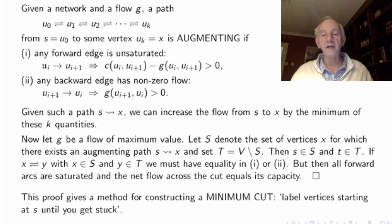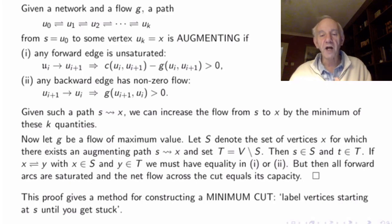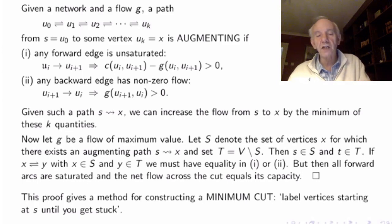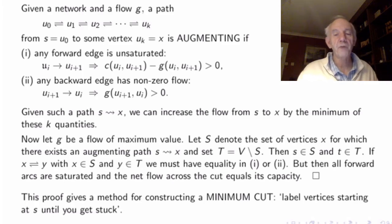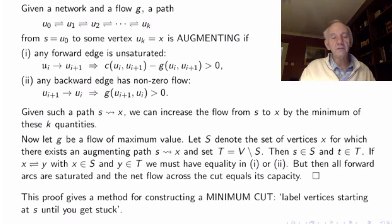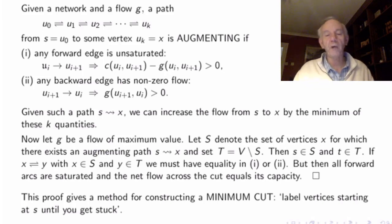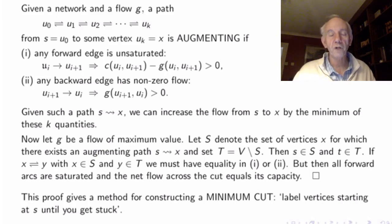This also gives us a way of constructing a minimum cut. We do the labelling algorithm, and even once we find the maximum flow, we try one more iteration. We don't get to the sink, because otherwise we wouldn't have had a maximum flow. But we get a certain set of vertices. Using the rules for labelling, all the labels we've reached will form the subset capital S of a minimum cut.